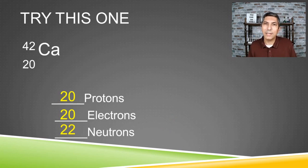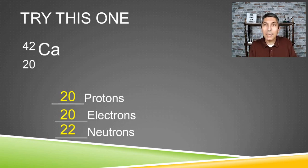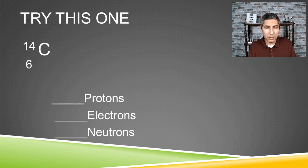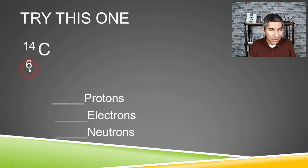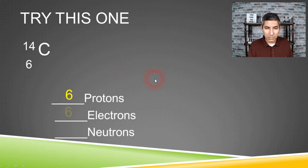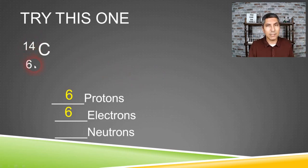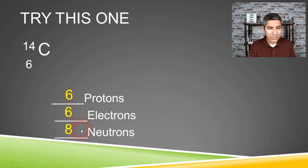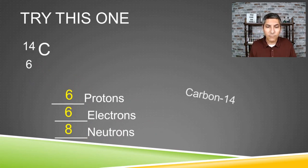This particular version of calcium has 20 protons, 20 electrons, and 22 neutrons. The name of this isotope is the element name with a hyphen and then the mass number — so we call this calcium-42. Let's try another example. This isotope has an atomic number of 6, so it has six protons, and the number of electrons is also six. The number of neutrons is 14 minus 6, which is eight. So this has six protons, six electrons, and eight neutrons — and we call it carbon-14.